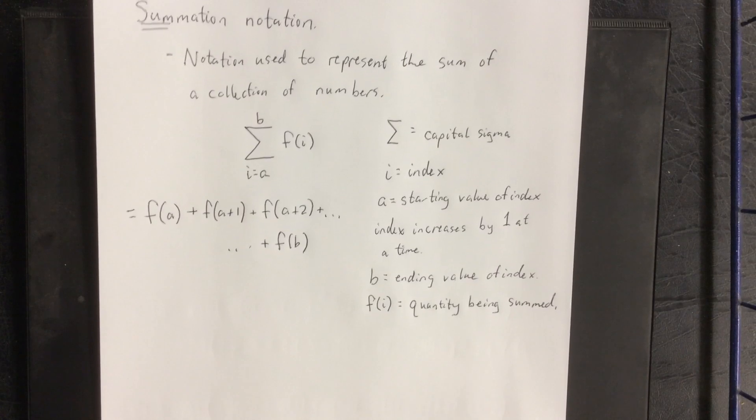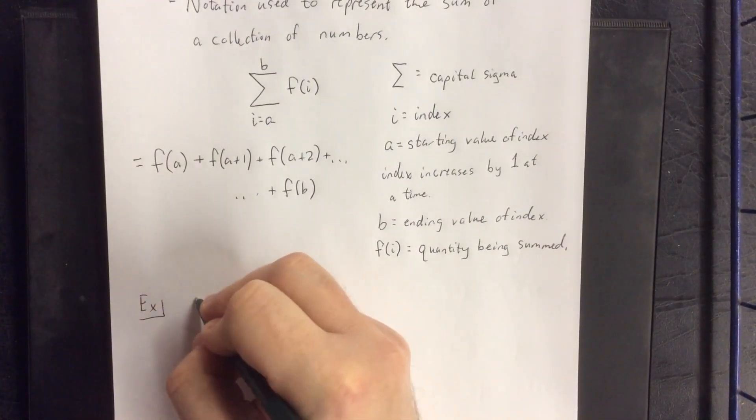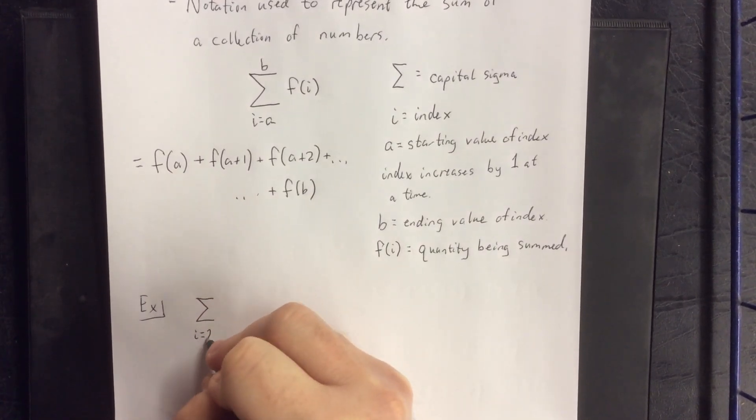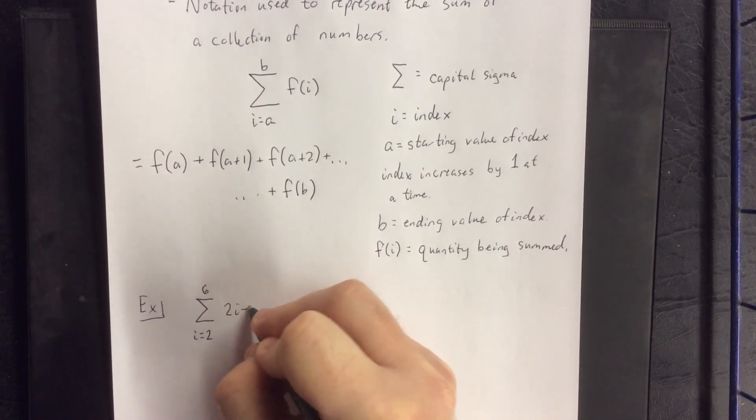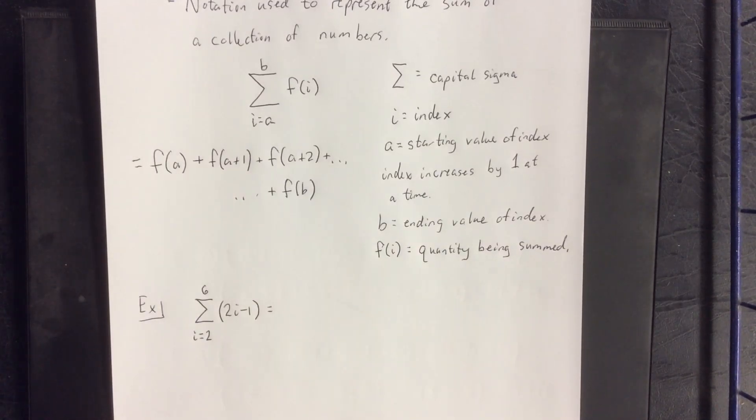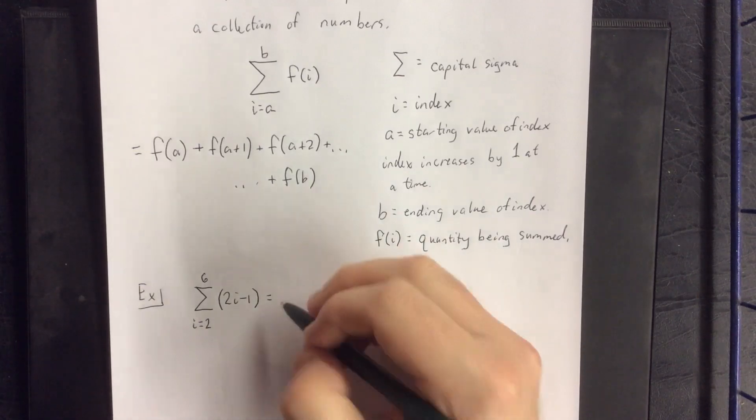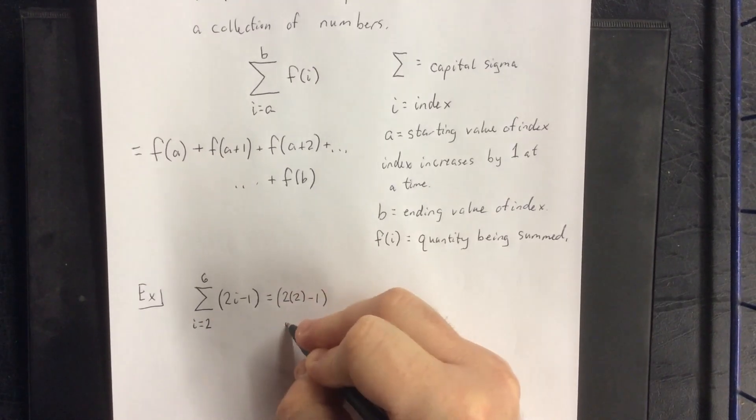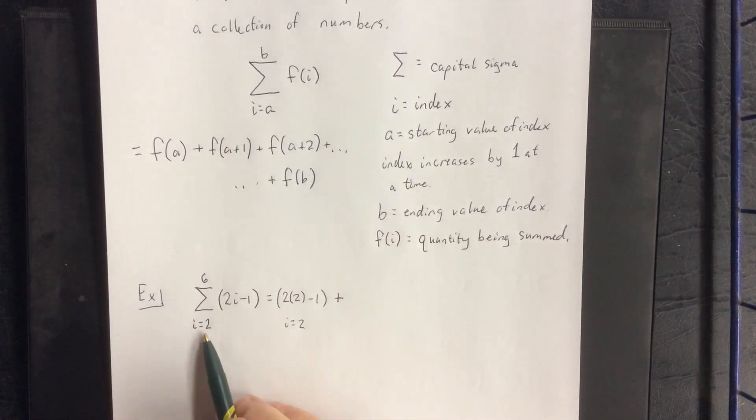To give you an idea of what this might look like, if we actually had some numbers in here, I could ask for the summation from I equals two to six of two I minus one. So if I were to expand this out, first thing I would do is plug in I equals two to the given function. So this would be two times two minus one. That represents I equals two. Plus, repeat the process, increasing the value of the index by one at a time.